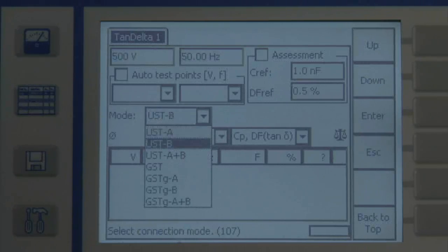USTA, USTB, USTA plus B, GST, GSTGA, GSTGB, and GSTGA plus B. Let's look at a typical example.